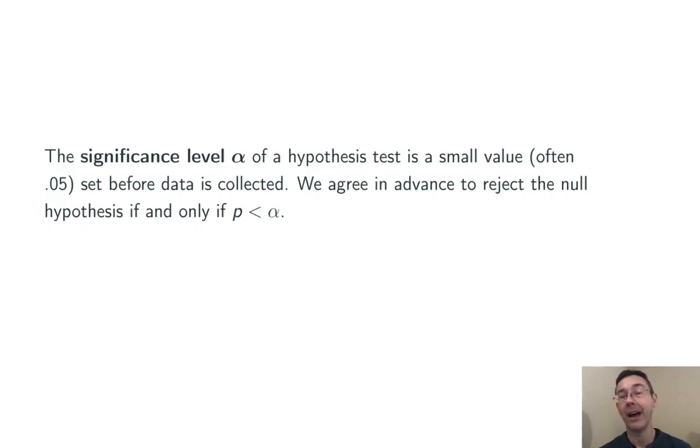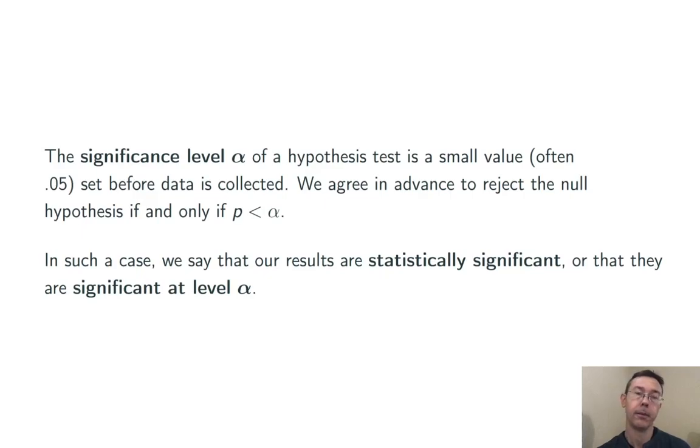The significance level alpha of a hypothesis test is just a value that we set before the data is collected, and we agree in advance that we will reject the null hypothesis if and only if our p-value is less than that alpha. The most common alpha is 0.05, by the way, although that's far from universal. In the case where we reject the null hypothesis in that situation, we say that our results are statistically significant, or that they're statistically significant at significance level alpha.